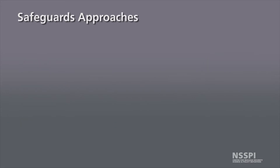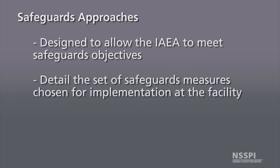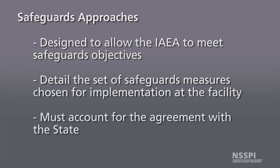Safeguards approaches are designed to allow the IAEA to meet safeguards objectives. They detail the set of safeguards measures chosen for implementation at the nuclear facility and must account for the specific type of agreement with the state. For example, if one state has an MSERC 66 safeguards agreement and another has an MSERC 153 safeguards agreement, the safeguards approaches will be different for those different states.